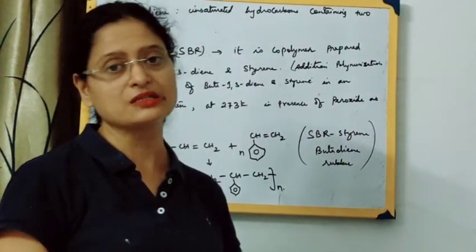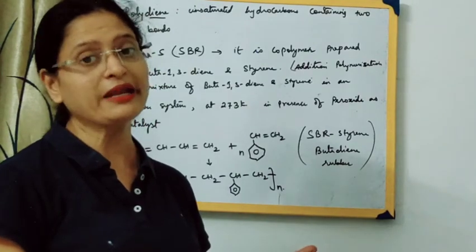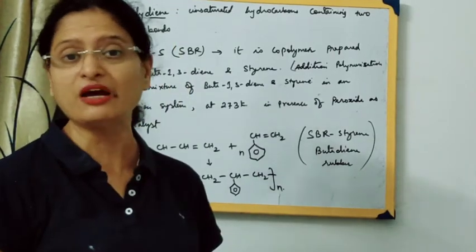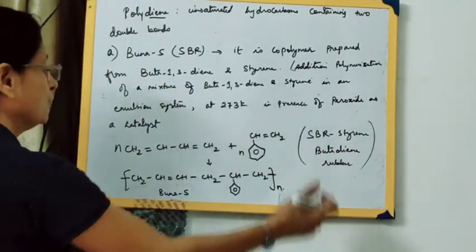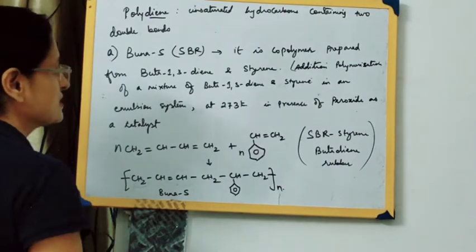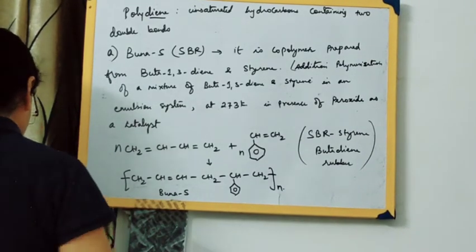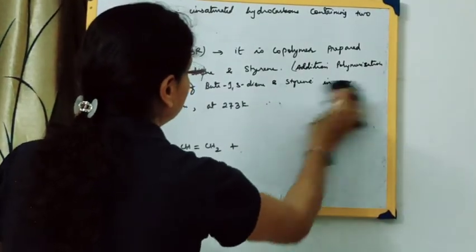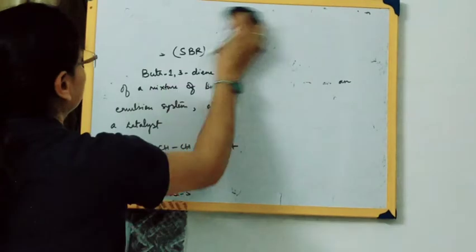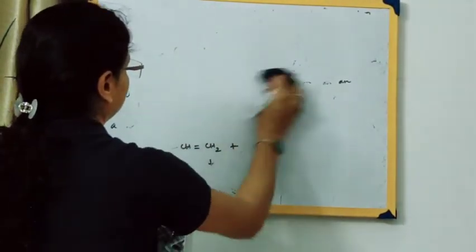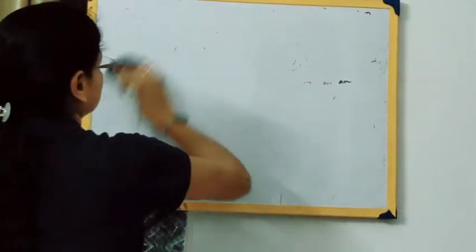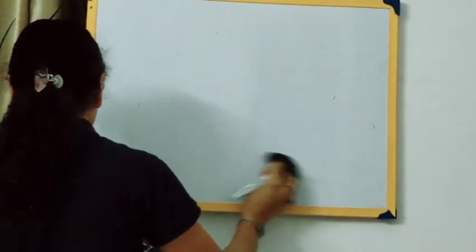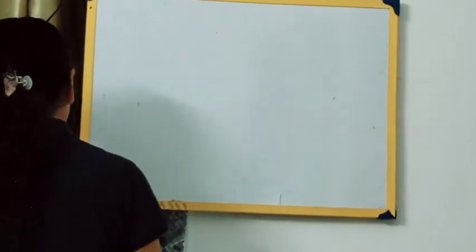Rubber is essentially isoprene units. Natural rubber exists, and when prepared synthetically it becomes neoprene. Neoprene preparation is not in the syllabus — we study styrene-butadiene rubber (Buna-S). Next is the class of polyhalo-olefins.